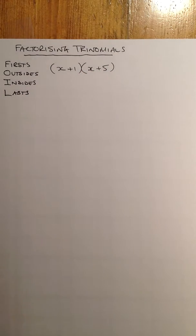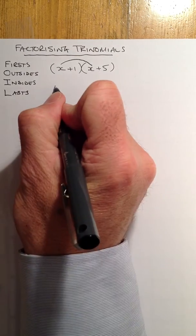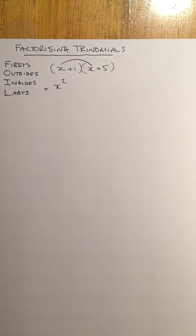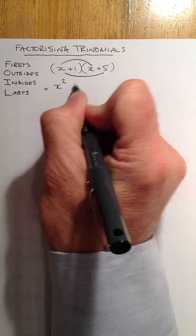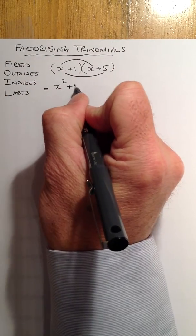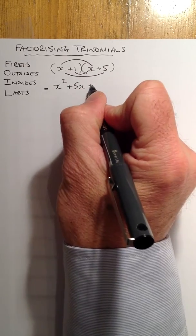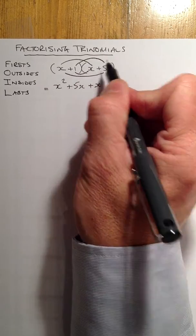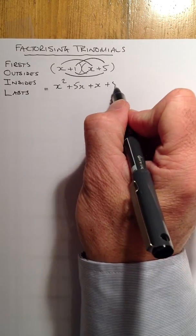Considering how we multiply these out using FOIL: first would be these two here that we'd multiply together, so that would give me an x squared. I'd then multiply the outsides, which is this one times that one, gives me 5x. Multiply the insides, plus x. And the lasts, which is 1 times 5, will give me plus 5.